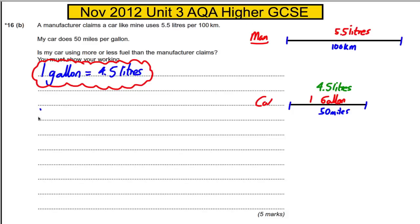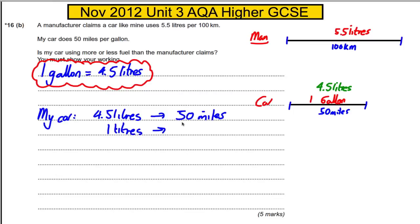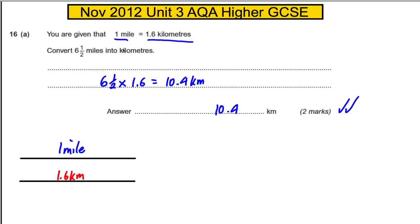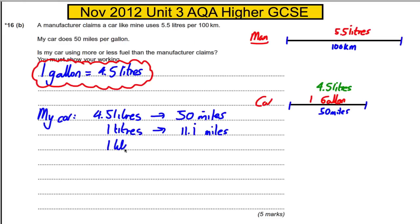For my car, I know that in 4.5 liters I go 50 miles. To find how far I go on one liter, I divide: 50 divided by 4.5 gives 11.1 recurring miles per liter. Now from part (a), one mile is 1.6 kilometers, so I multiply 11.1 by 1.6, which gives 17.7 recurring kilometers. So one liter of fuel takes my car 17.7 kilometers.